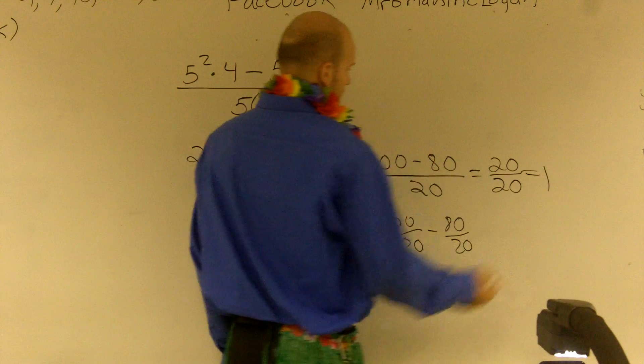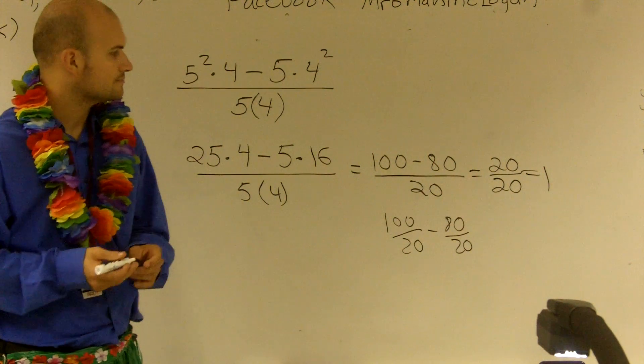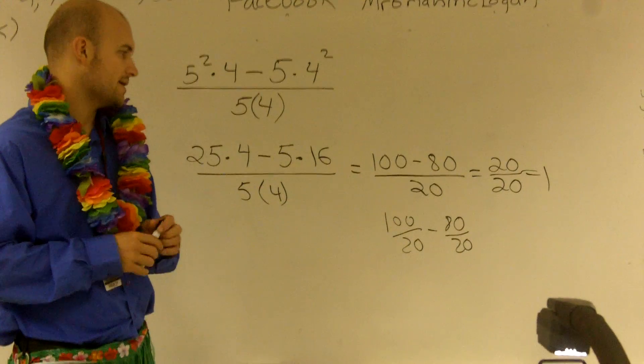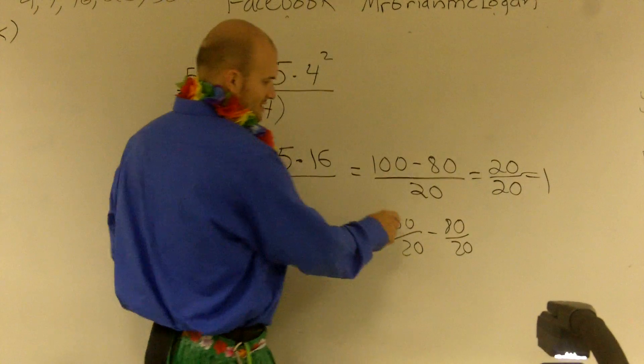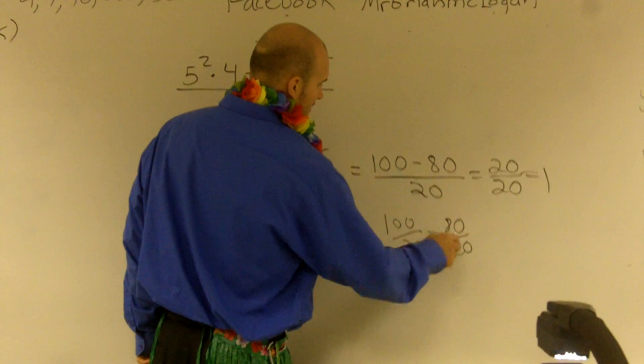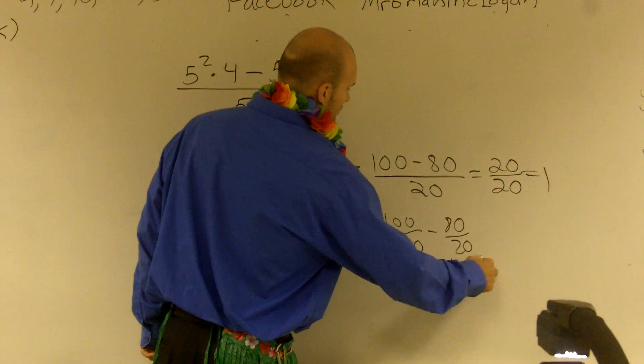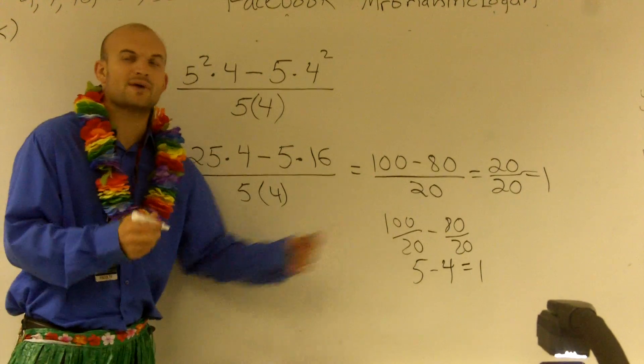I'm trying to look at this. Because then this is 100 over 20 gives you 5, 80 over 20 gives you 4, which leaves you 1. So those are two different ways to solve for it.